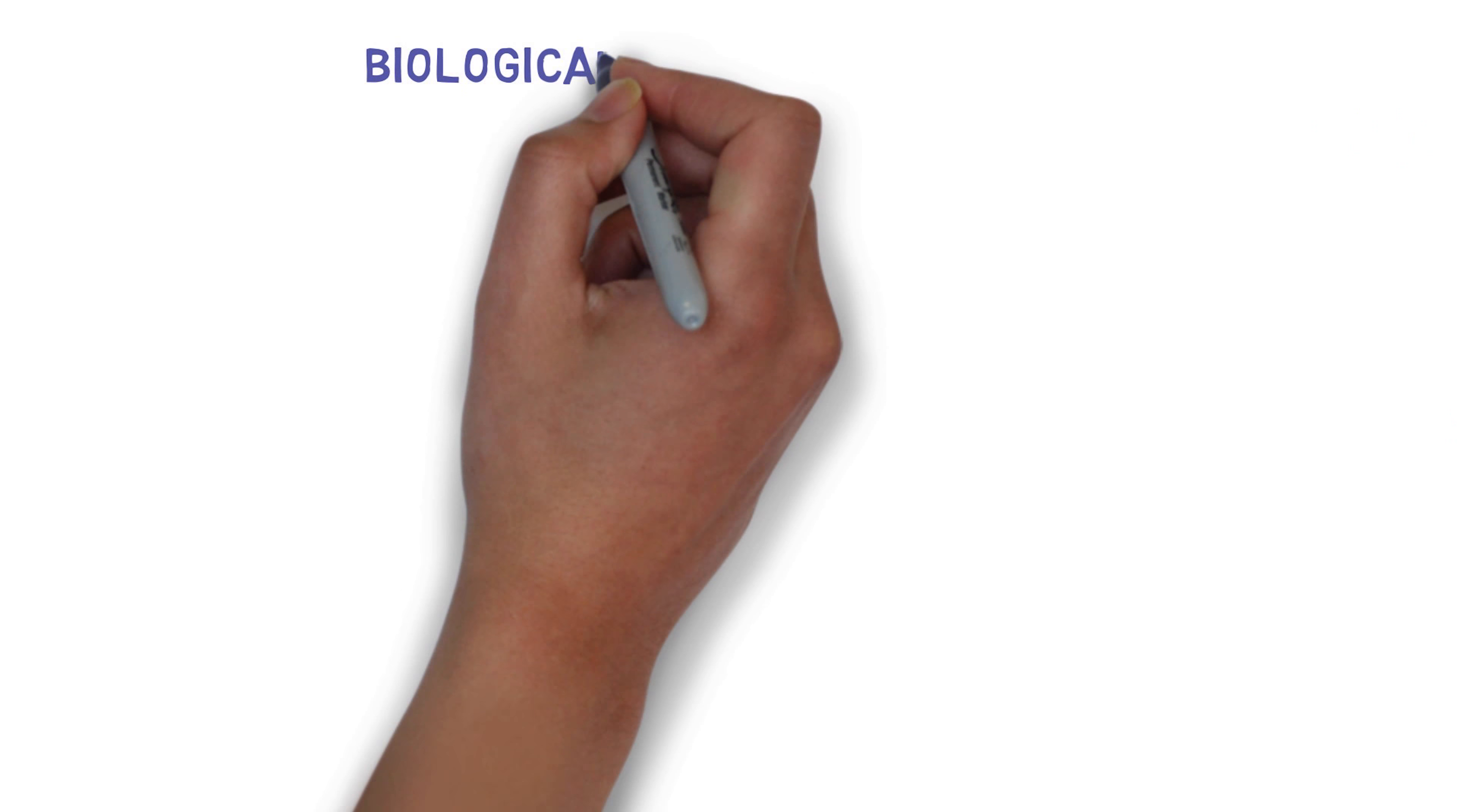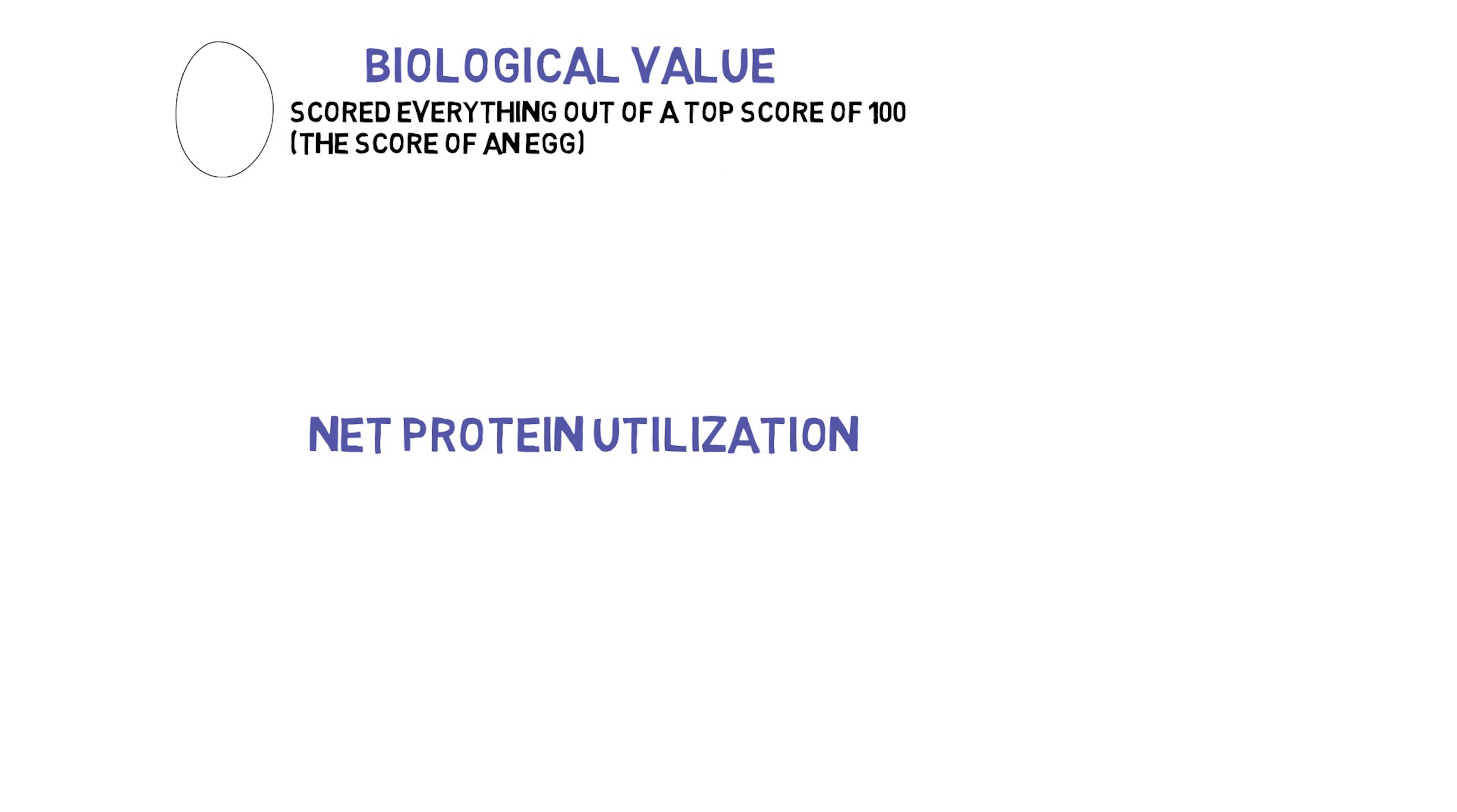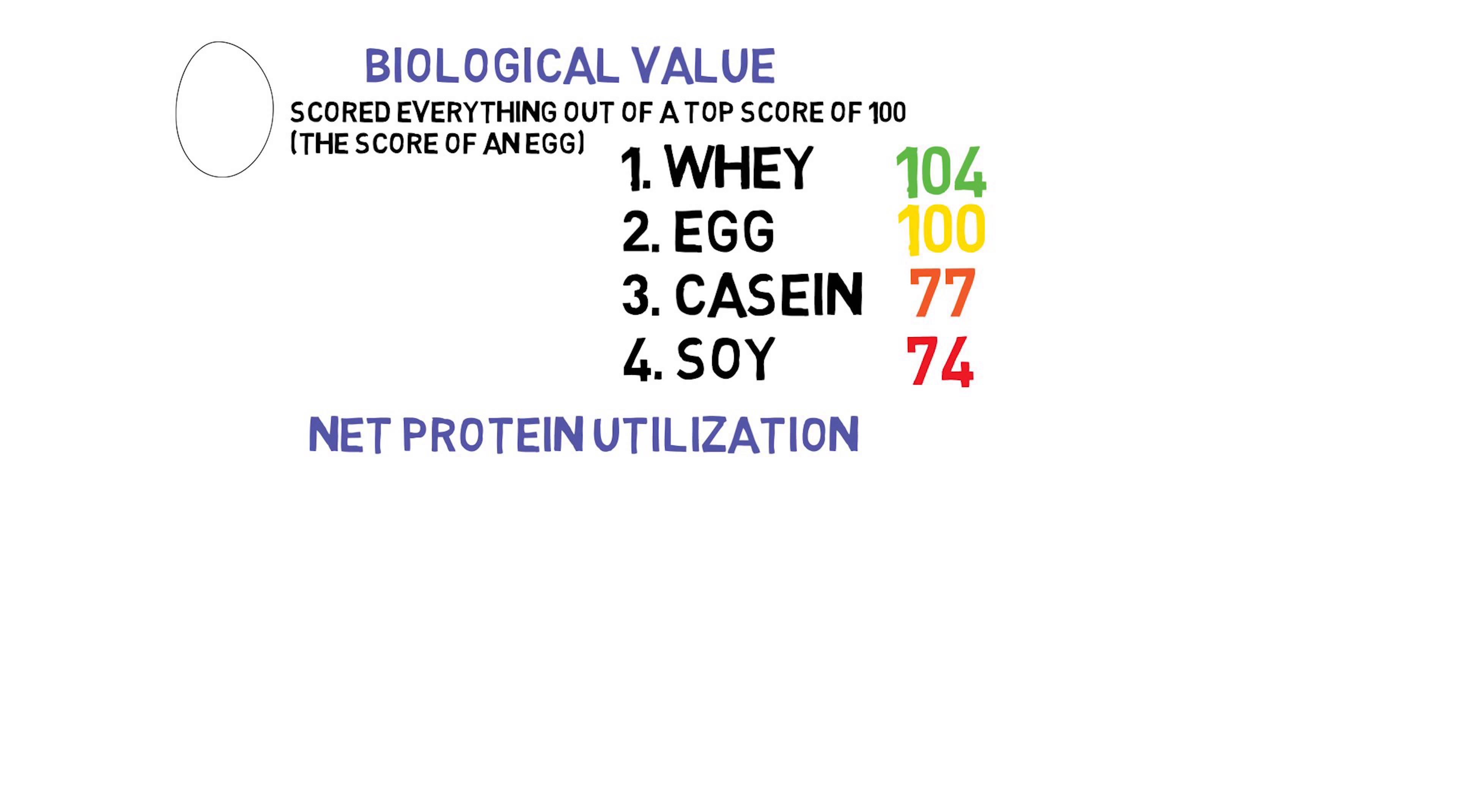Over time, various other measures were developed. Biological value, net protein utilization, and protein digestibility corrected amino acid scores. These were all designed to test how bioavailable the protein is. In other words, if you eat 100 grams of protein, how much of it actually gets digested by your body, and how much simply passes through you. If a protein is particularly difficult to break down in our body, it performs worse on these tests.